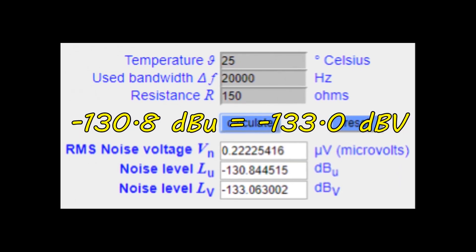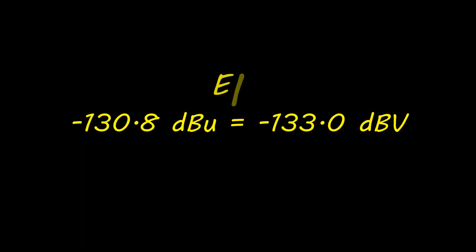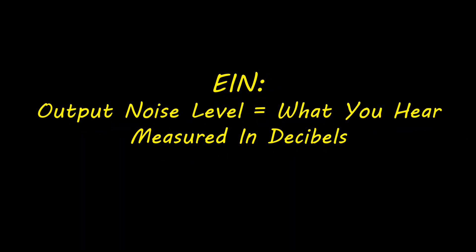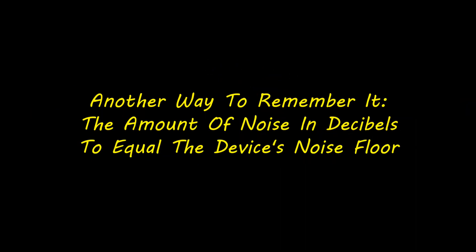Regardless, this very low noise floor we're talking about is the EIN — you see the output noise level as if it were measured as an input. A low EIN is important because some microphones, like dynamics and ribbons, need to be amplified a lot to get a proper level out of them.